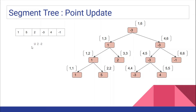For example, suppose there is a query of type U 2 -2, where U stands for update, meaning: at index 2, replace the element with -2. Currently at index 2 we have element 5, and now we have to replace 5 with -2. So if we replace 5 with -2, what are the nodes that are going to be affected in the segment tree?